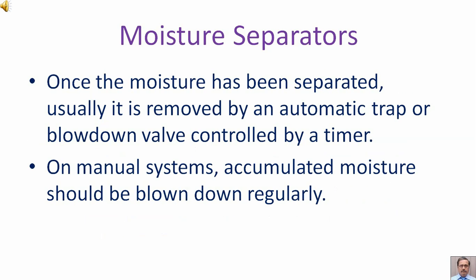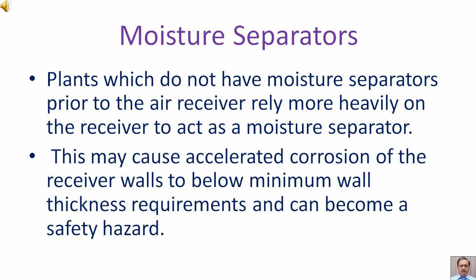Once the moisture has been separated, it is usually removed by an automatic trap or blow-down valve controlled by a timer. On manual systems, accumulated moisture should be blown down regularly. Plants which do not have moisture separators prior to the air receiver rely more heavily on the receiver to act as a moisture separator. This may cause accelerated corrosion of the receiver walls below minimum wall thickness requirements and can become a safety hazard.